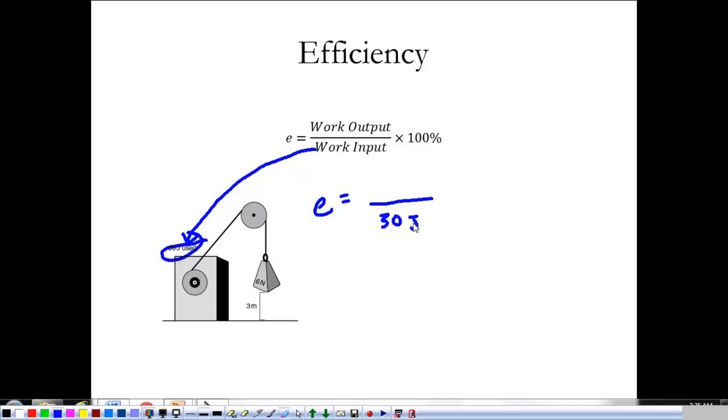I'm exerting 30 joules to do whatever's going to happen. And over here, I see that we've lifted up three meters of six-newton mass, which means we've done 18 joules worth of work. That's the work output. That's what physically actually got done. 18 joules. And so, what we're going to need to do, okay, and then times 100%. So, looking at the efficiency of this, we see that we have 60% efficiency.